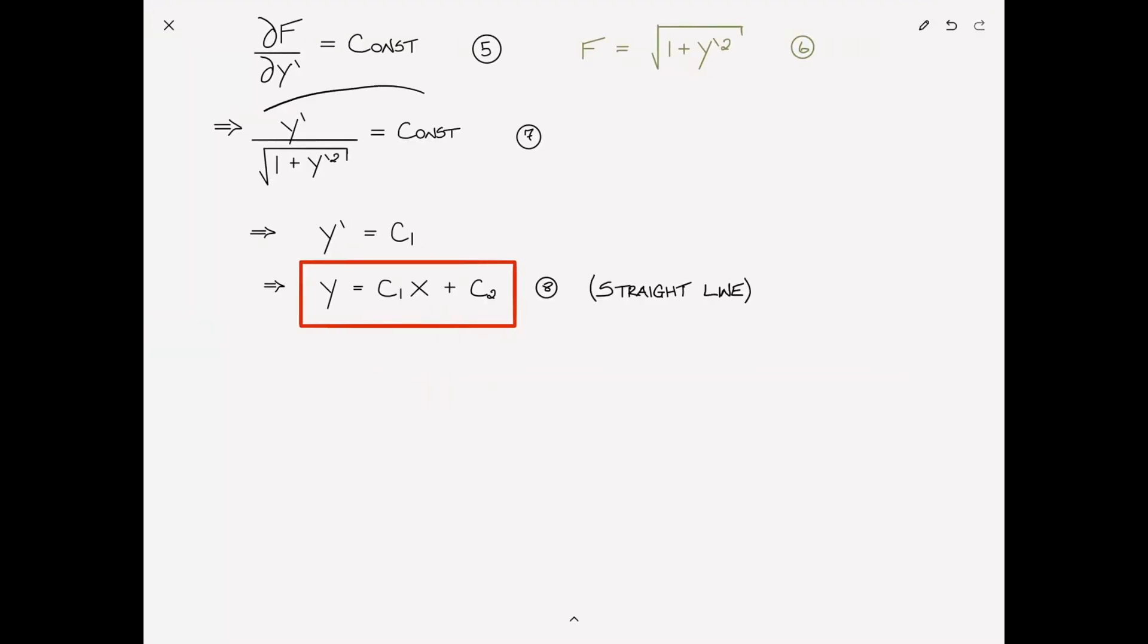This equation is satisfied by y' is equal to constant, and when we integrate that we see it as in fact a straight line. Even if you didn't know that the shortest path between two points on a plane was a straight line, we've shown through variational calculus how you can now prove that.